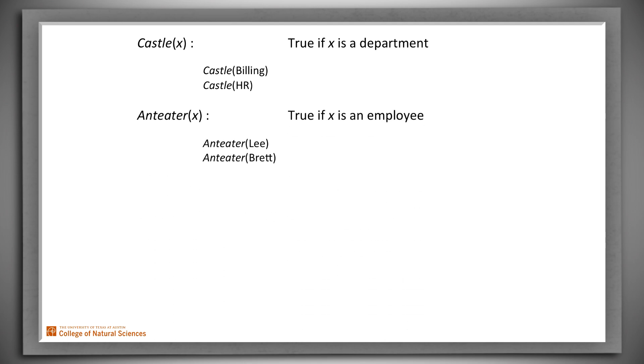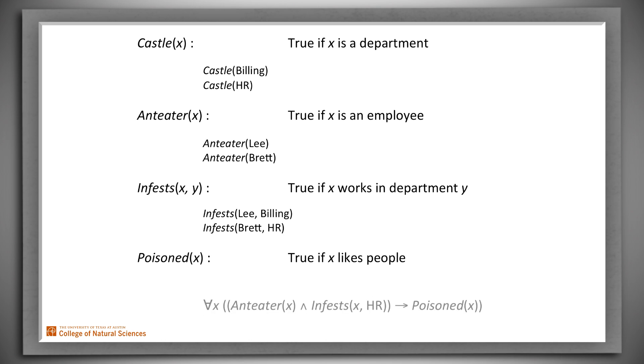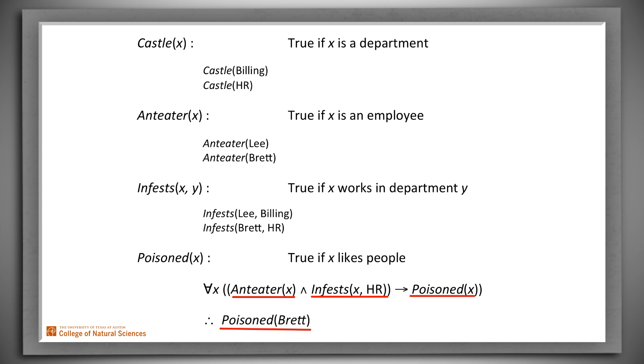So Billing and HR are castles. Anteater is true if X is an employee. So Lee and Brett are anteaters. Infests of X, Y is true if X works in department Y. So Lee infests Billing and Brett infests HR. And Poisoned of X is true if X likes people. Now we assert a claim that anybody who's an anteater and infests HR is poisoned. So now we can say that a particular individual who's an anteater and infests HR is poisoned. And thus we can conclude that Brett is poisoned.